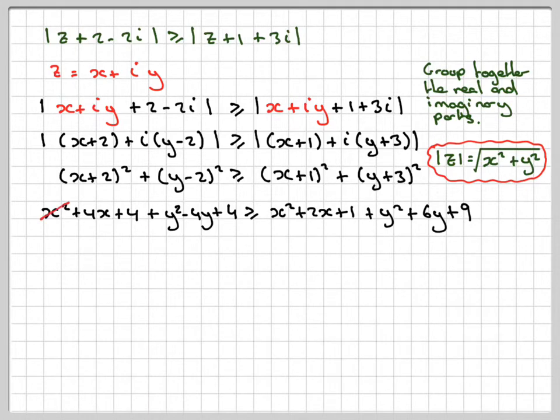The x² will cancel out, and the y² will cancel out, and then we've got -4y - 6y which gives -10y, greater or equal to -2x (taking the 4 over there), and then we've got 4 + 4 = 8, 9 + 1 = 10, 10 - 8 gives plus 2. So dividing through by -10...